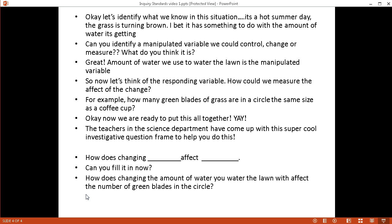Let's see what you got. This is what I came up with. Let's see how yours compares to mine. I said, how does changing the amount of water you water the lawn with affect the number of green blades in the circle? If you notice, we've got our manipulated variable, which is the amount of water. And, we also have our responding variable, that's the number of green blades in the grass. We want to know, how does changing the amount of water affect the number of green blades that we can measure in a circle the size of a coffee cup?